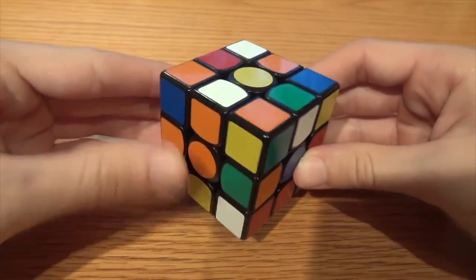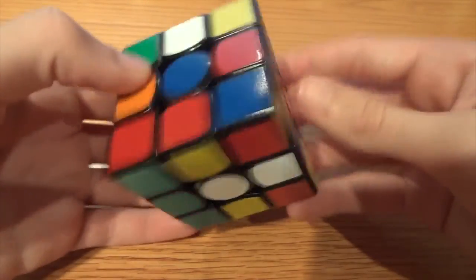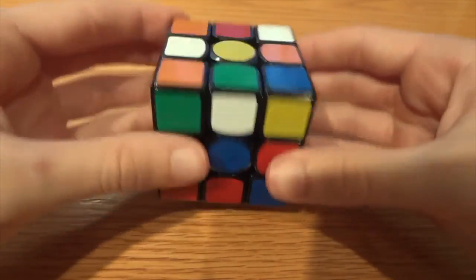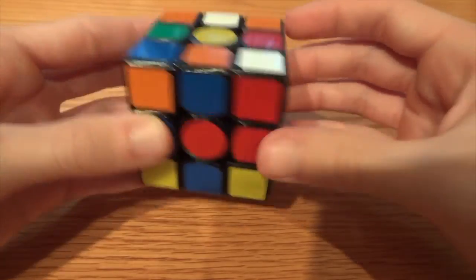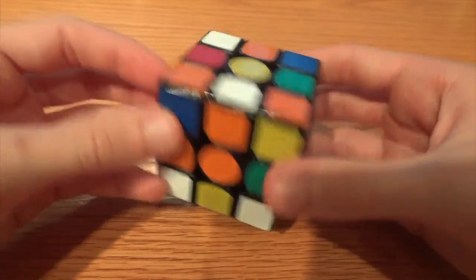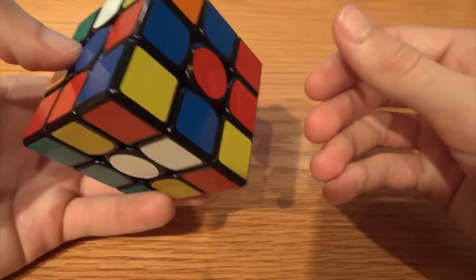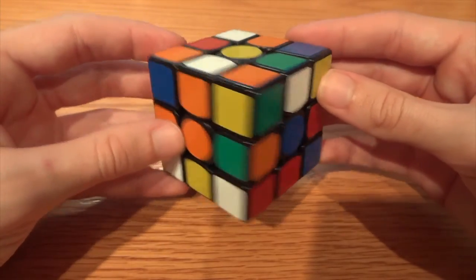For this solve I see that my orange edge is set, my blue edge is also set, and my green and red edges are floating. However, they are in very good positions. So I'm going to use a move which I call the piggyback.